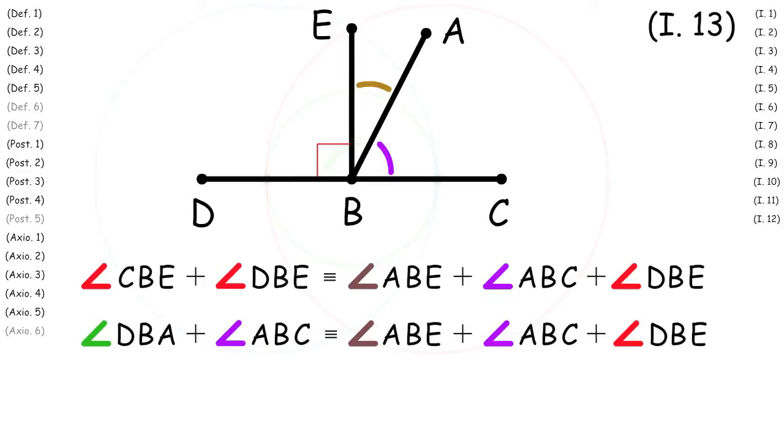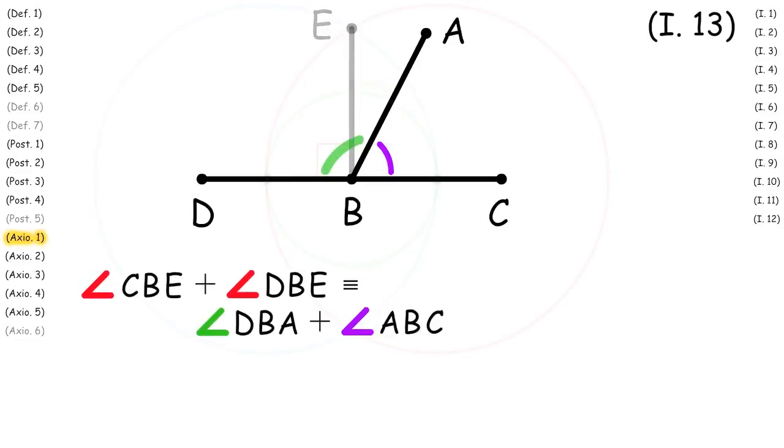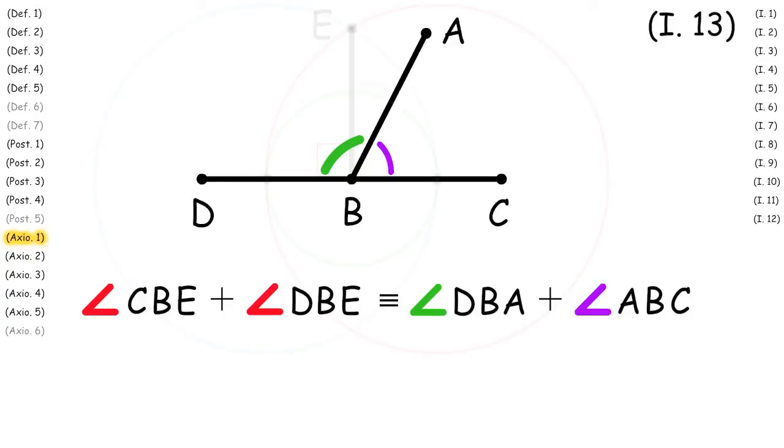And so now with these two facts we apply Proposition 1 to show that angle CBE plus angle DBE is congruent to angle DBA plus angle ABC. And therefore we have proven that the two adjacent angles are congruent to the sum of two right angles.